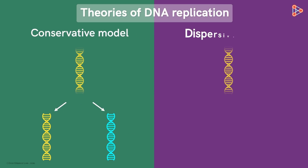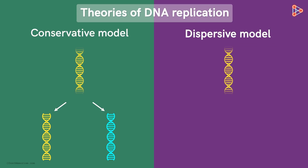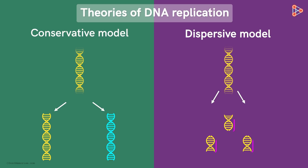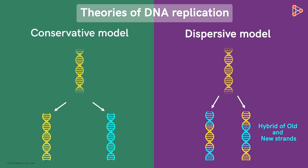The next model is called the dispersive model of replication. Dispersive means to disperse or scatter. According to this model, the DNA which is about to replicate breaks into small fragments, and new strands get synthesized in between. As a result, we get a hybrid of both new and old strands together — the old parental strands appear to be dispersed in the newly synthesized one. Hence this method is named dispersive.